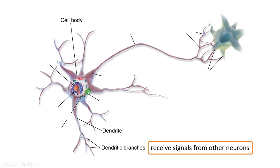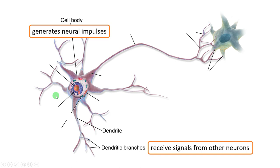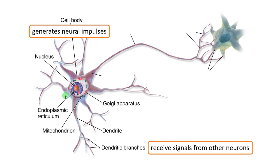The second structure is the cell body, also called the soma. The cell body is the core or central part of the neuron, containing the nucleus, DNA, and all other organelles like endoplasmic reticulum, mitochondria, etc. It generates neural impulses.